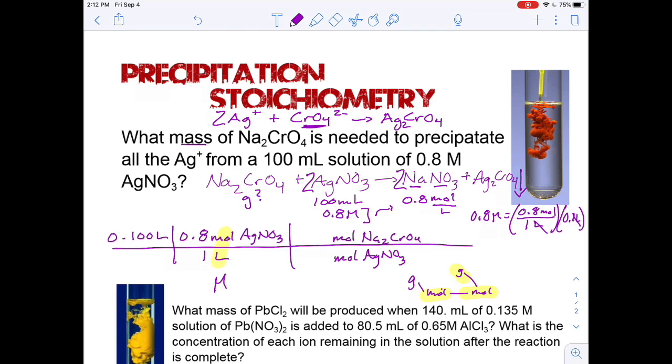And I have 2 moles of silver nitrate for every 1 mole of sodium chromate. Then I have 1 mole of sodium chromate to what, the grams of sodium chromate. And if I do that: 2 times 23 plus 51.9, 52-ish, plus 16 times 4, I get 162.